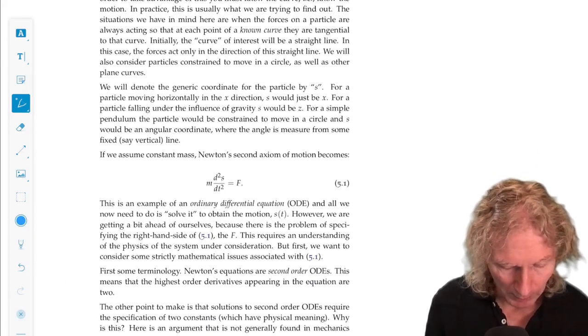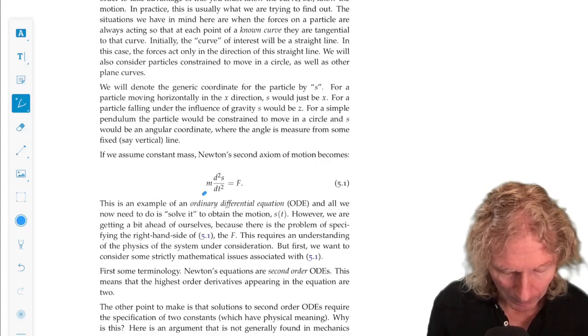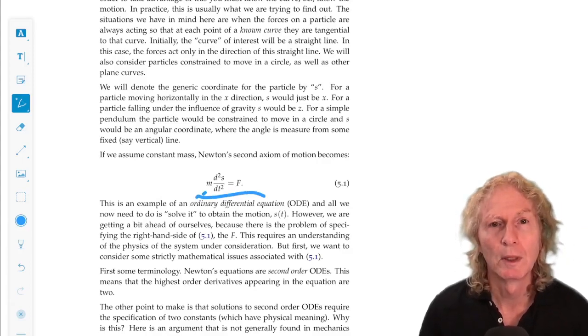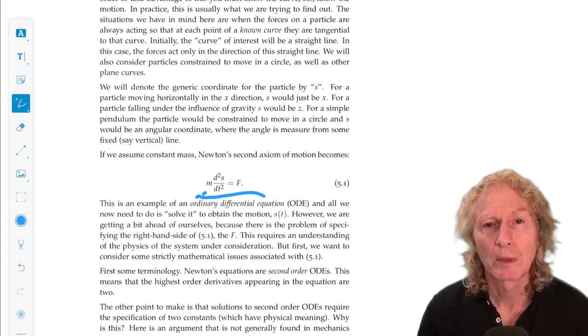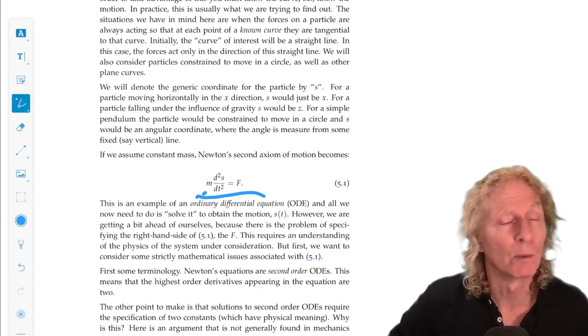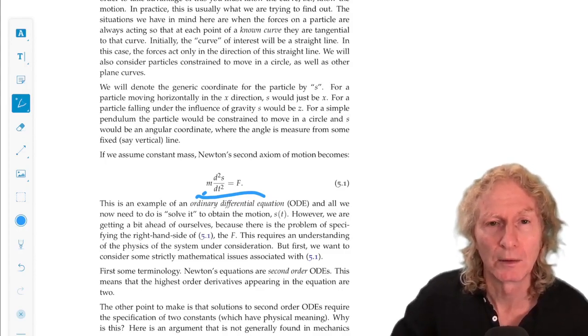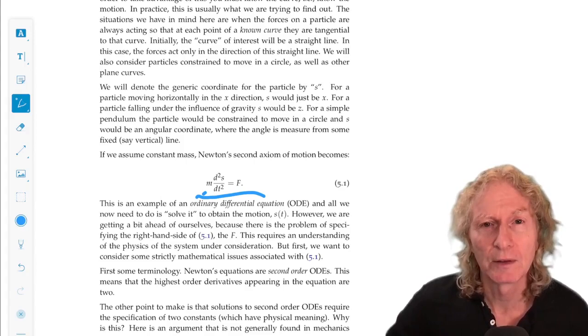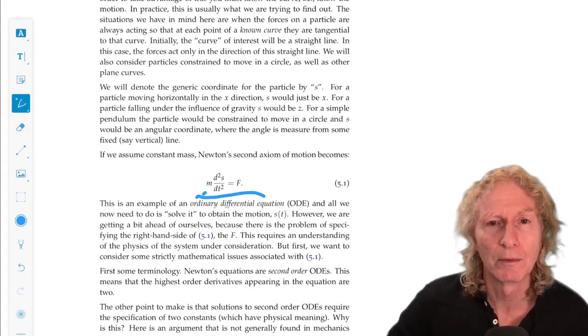So Newton's equation in this case is given by this equation, F equals ma. So what is this s, the variable s? Second derivative s with respect to t squared. Well, it's the acceleration, but s is a generic one-dimensional variable.